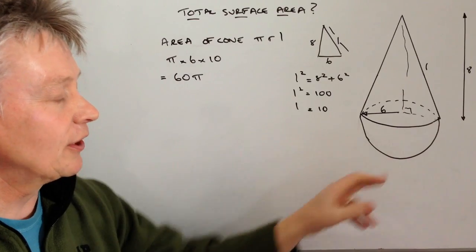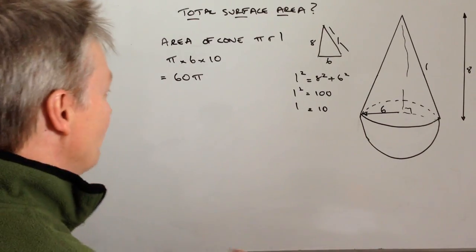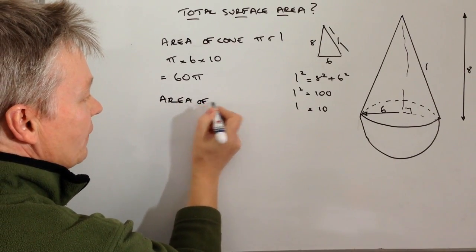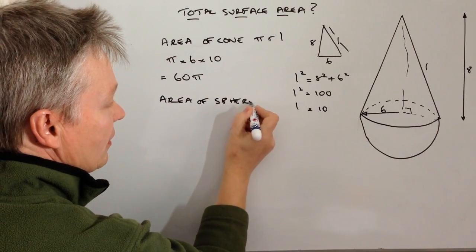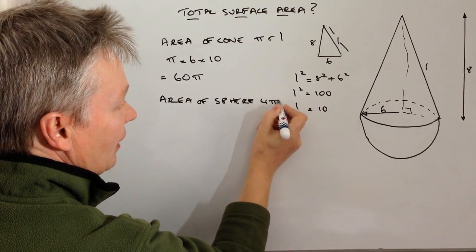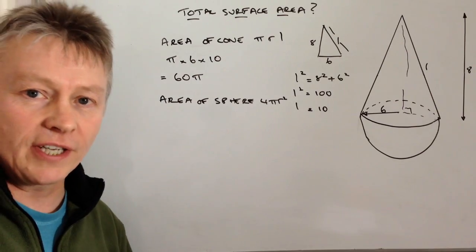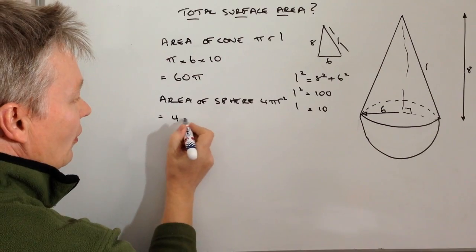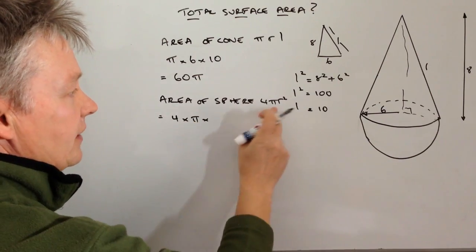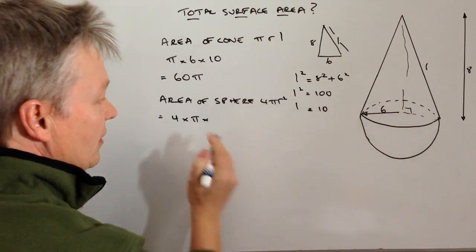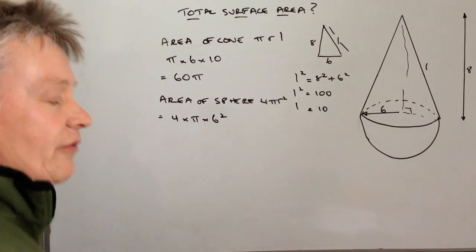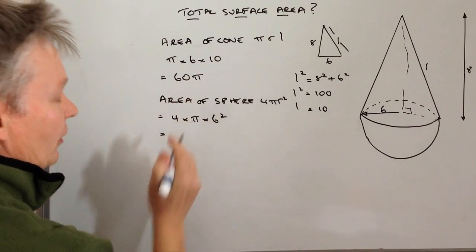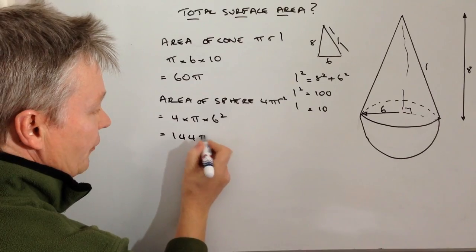Okay, so next we're going to have a look at the surface area of the hemisphere at the bottom. Now the formula that we want is area of a sphere is 4πr². So again we need to put this information into this, and we're going to have 4 times π. Now the radius we know is 6 again, so it's going to be 6², which is 36. So what that will give us is 144π.